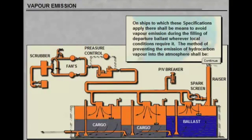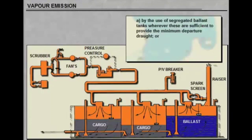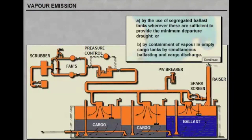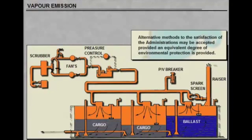On ships to which these specifications apply, there shall be means to avoid vapour emission during the filling of departure ballast, wherever local conditions require it. The method of preventing the emission of hydrocarbon vapour into the atmosphere shall be: (a) by the use of segregated ballast tanks, wherever these are sufficient to provide the minimum departure draught; or (b) by containment of vapour in empty cargo tanks, by simultaneous ballasting and cargo discharge. Alternative methods satisfactory to the administration may be accepted, provided an equivalent degree of environmental protection is provided.